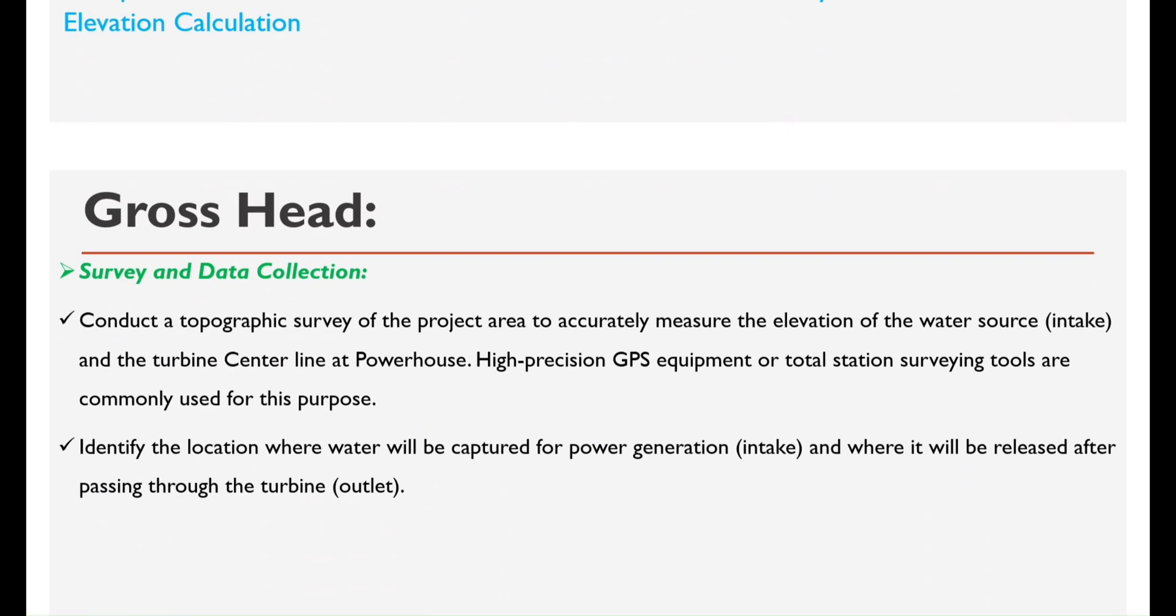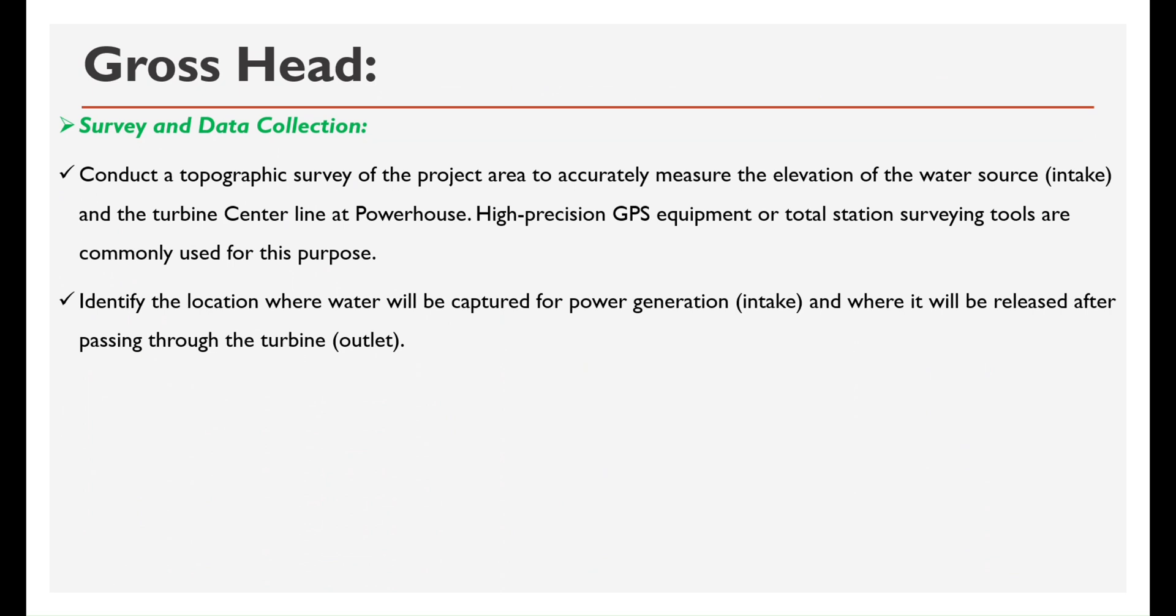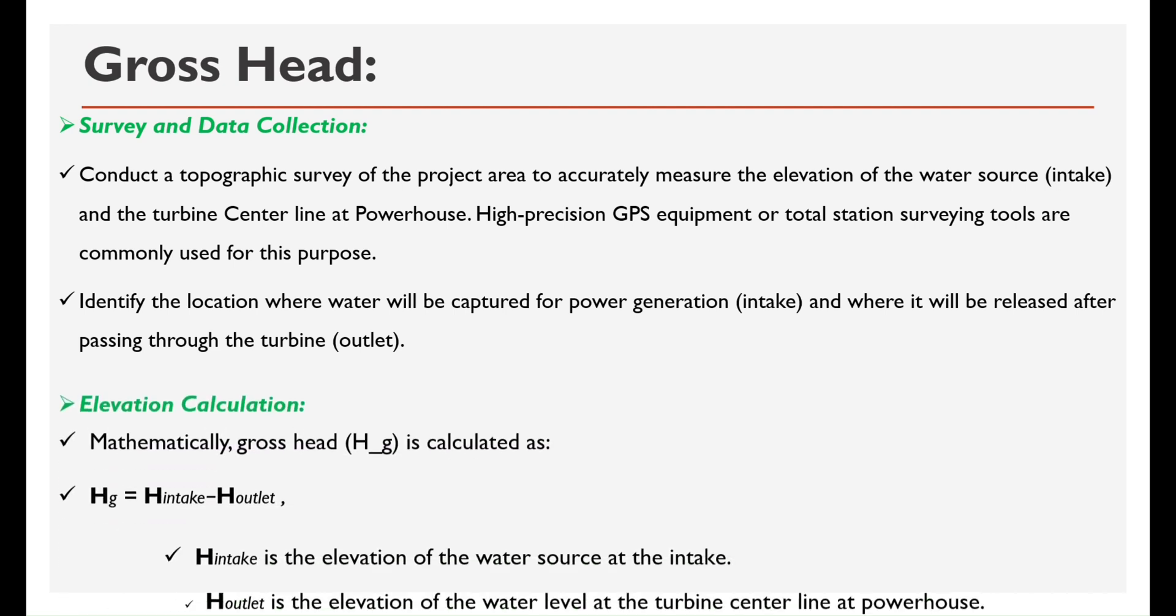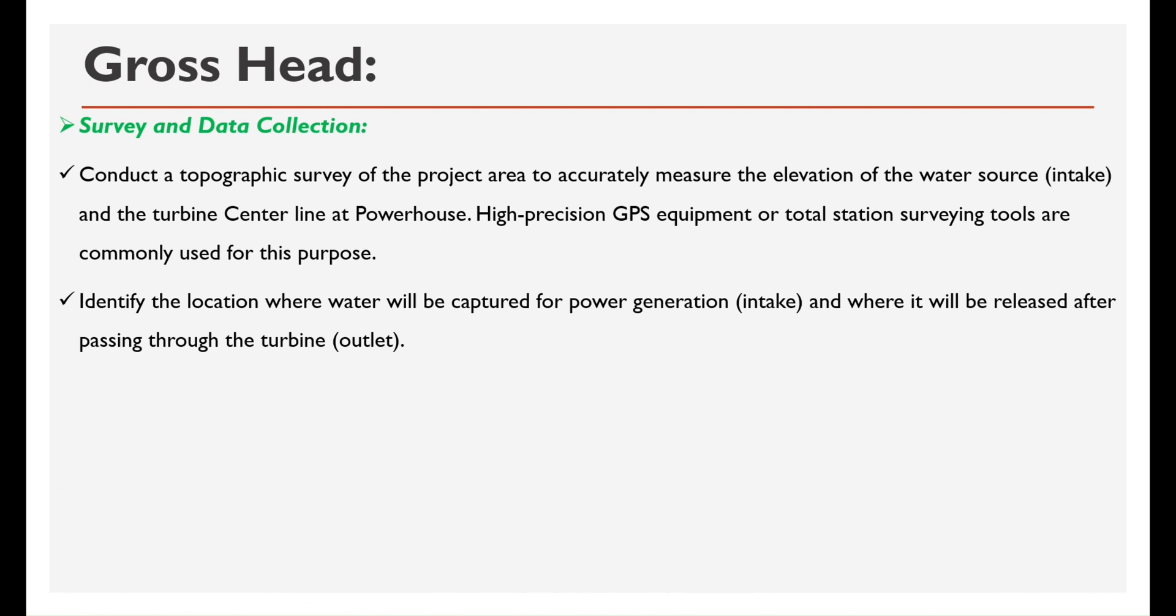Survey and data collection: Conduct a topographic survey of the project area to accurately measure the elevation of the water source and the turbine center line at powerhouse. High-precision GPS equipment or total station surveying tools are commonly used for this purpose. Identify the location where water will be captured for power generation and where it will be released after passing through the turbine.